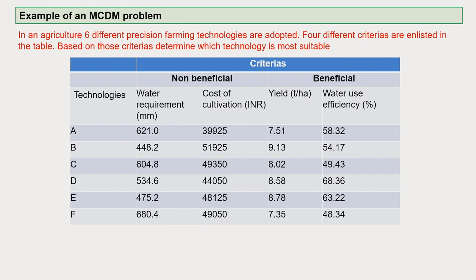Suppose in an agriculture experiment, six different precision farming technologies are adopted. Four different criteria are enlisted: C1, C2, C3, C4. Based on those criteria, we determine which technology is most suitable for a given area. This is a very common question — you have three or four technologies, like the example of irrigation: drip irrigation, surface water, groundwater — which one is suitable in which area? This is how you find the answer.